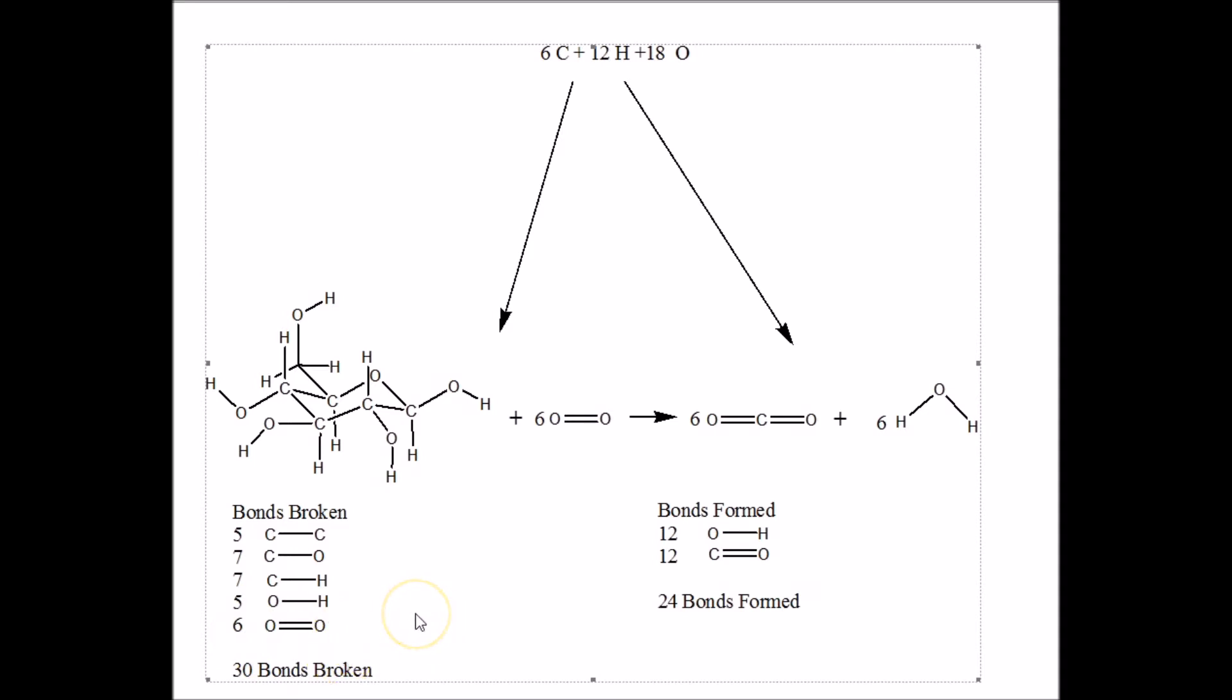Six adds up to 30 bonds that are broken, and 12 OH bonds are formed, and 12 C double bond O bonds are formed. So actually, more bonds are broken than are formed. You would think it requires energy to break bonds, and it releases energy to form bonds, but we'll see that these bonds are much stronger on average than these bonds. And so the reaction releases energy. We're going to use an Excel spreadsheet to demonstrate that in the next part of the talk.